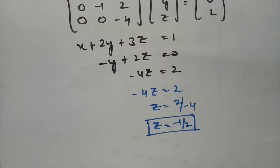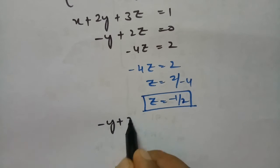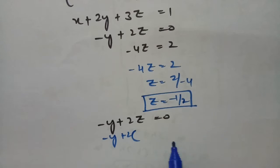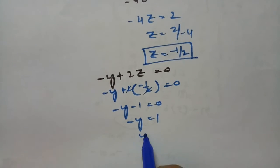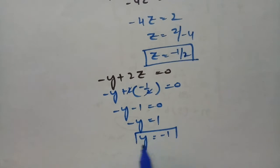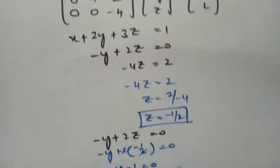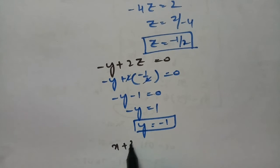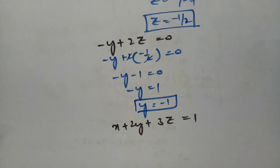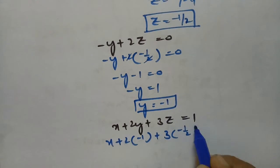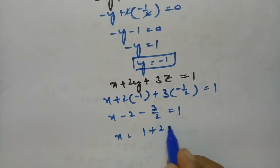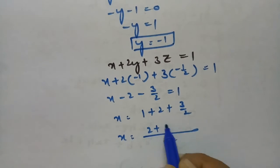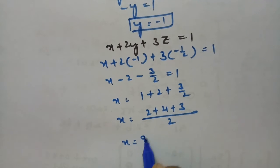With z = minus half, we substitute into the second equation: minus y + 2(minus half) = 0, giving minus y minus 1 = 0, so y = minus 1. Then substituting y = minus 1 and z = minus half into the first equation: x + 2(minus 1) + 3(minus half) = 1, giving x minus 2 minus 3/2 = 1, so x = 1 + 2 + 3/2 = 9/2.